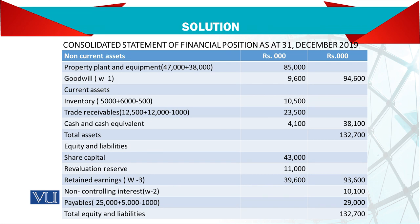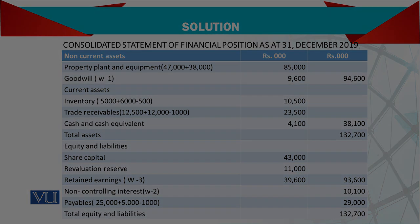The liability side shows 132,700 and the asset side also shows 132,700. Thank you very much.